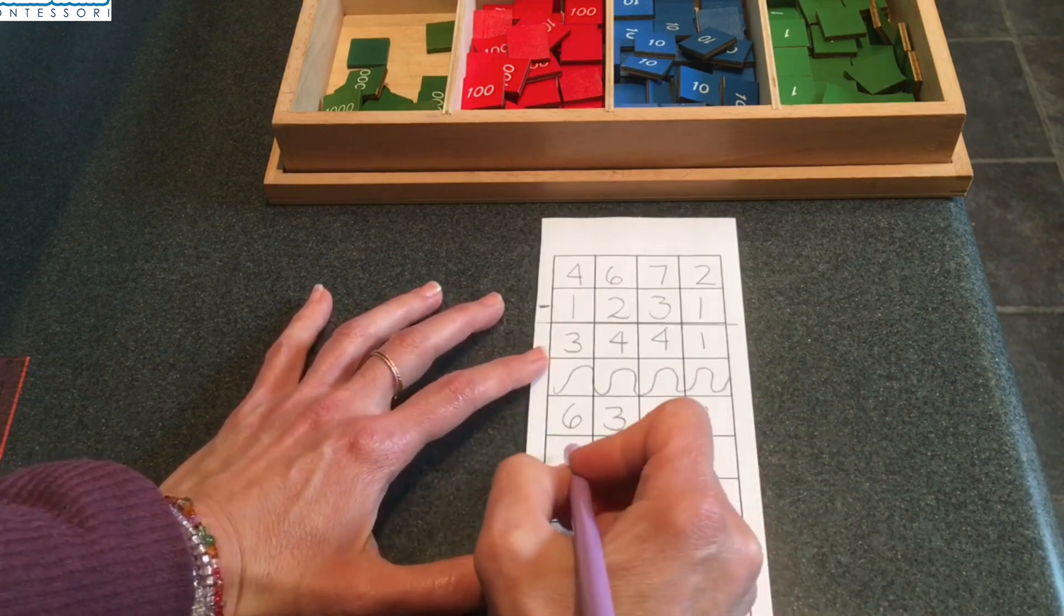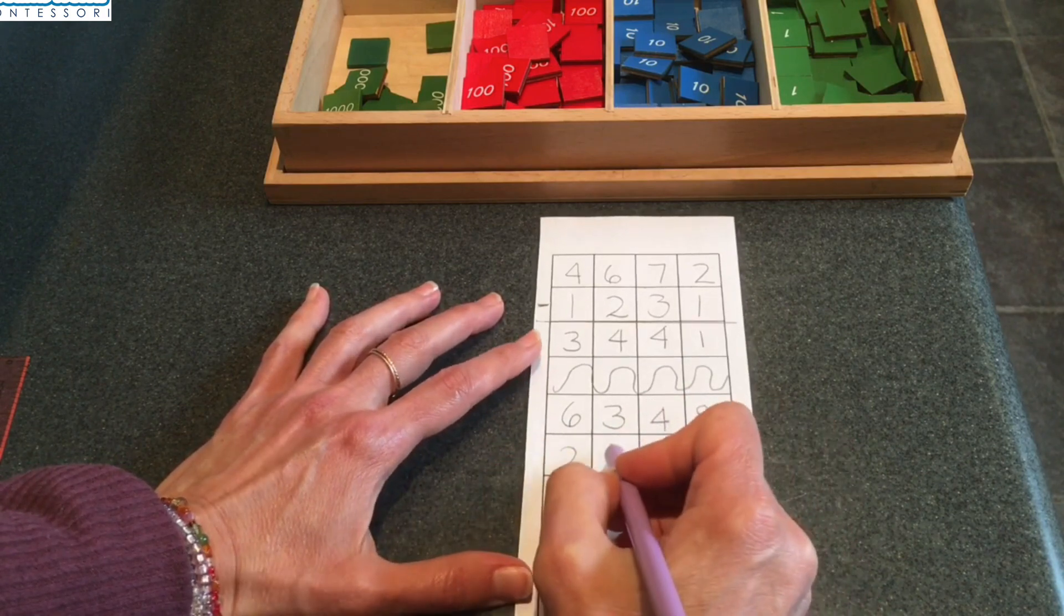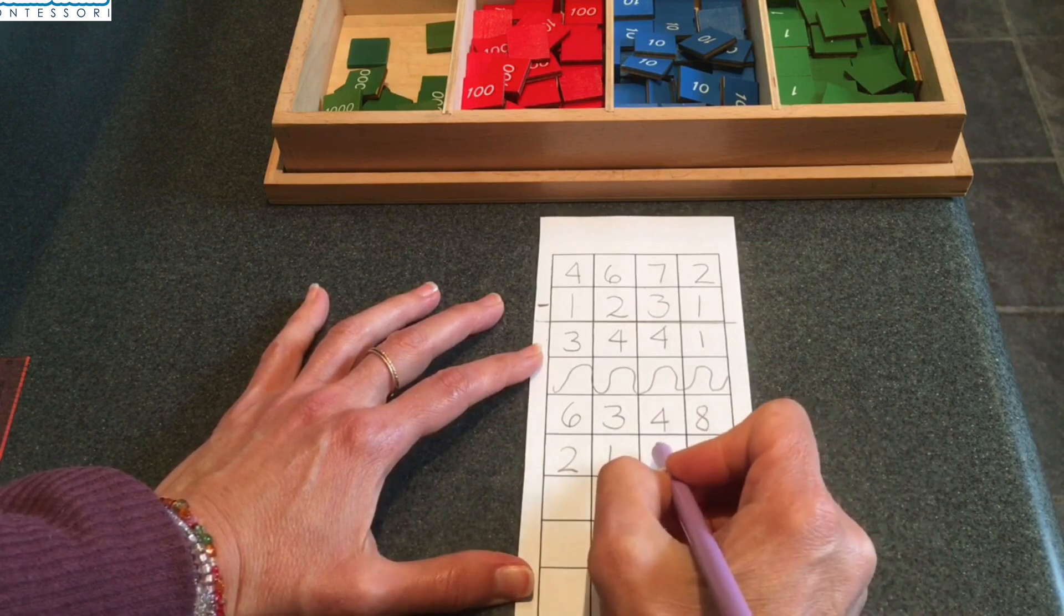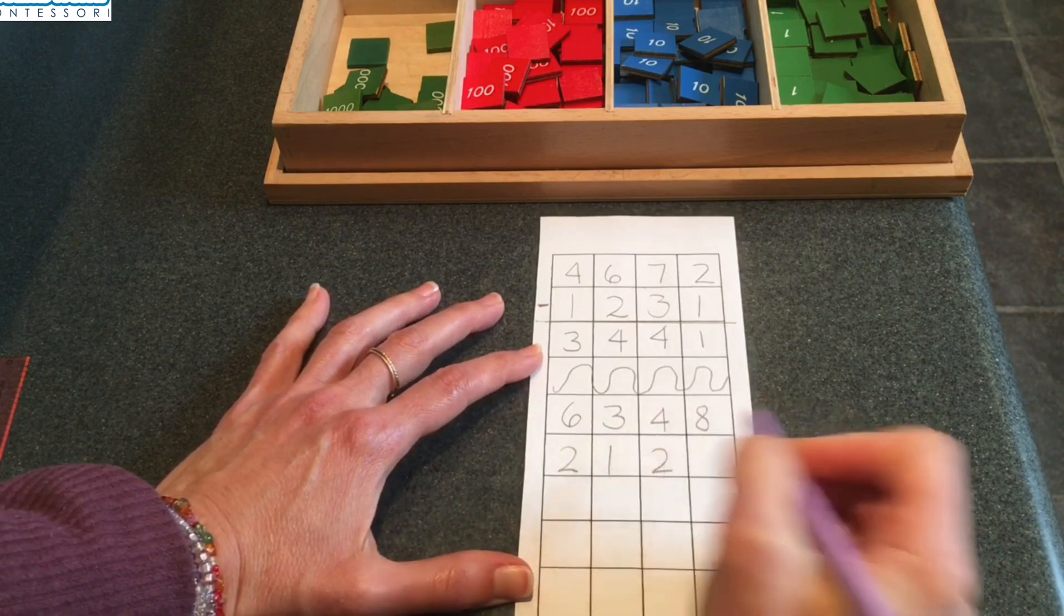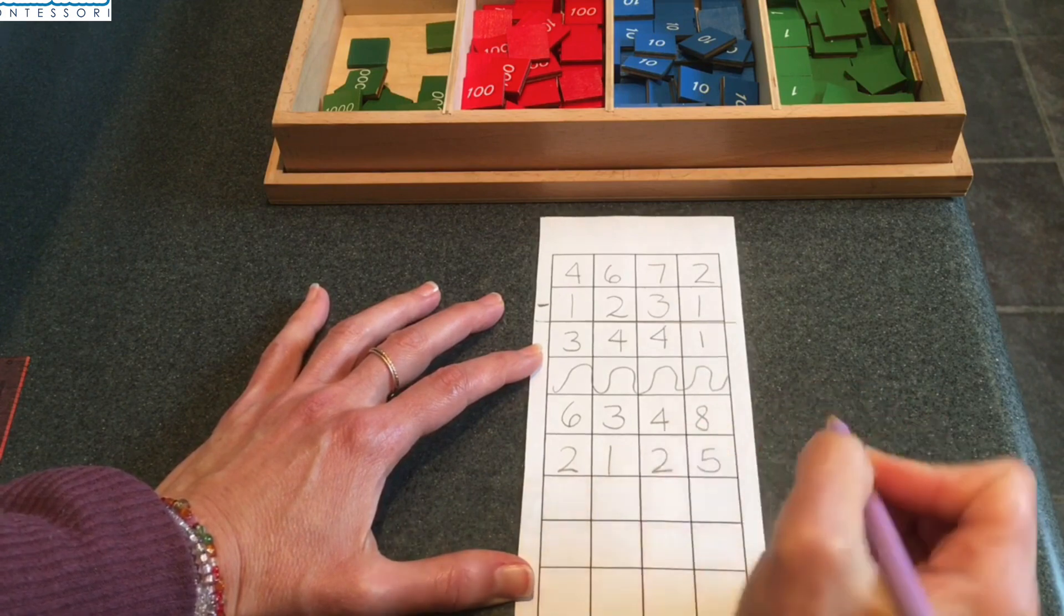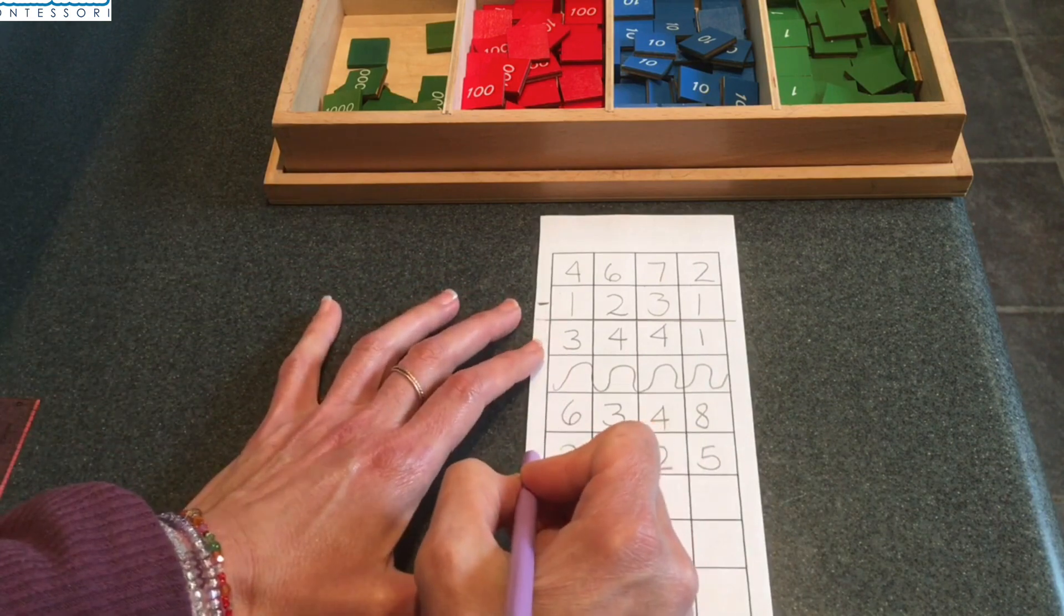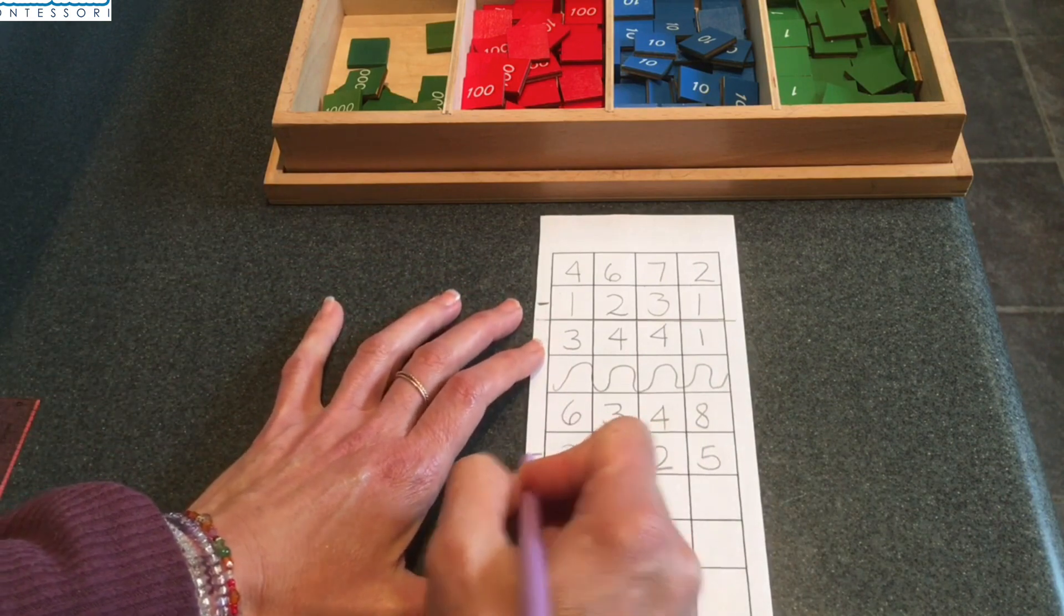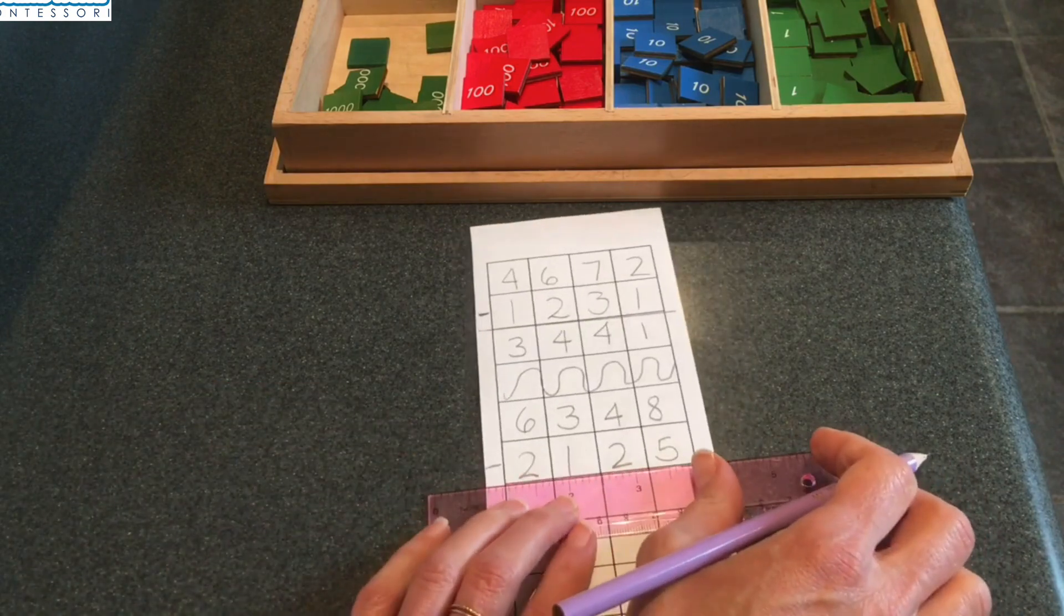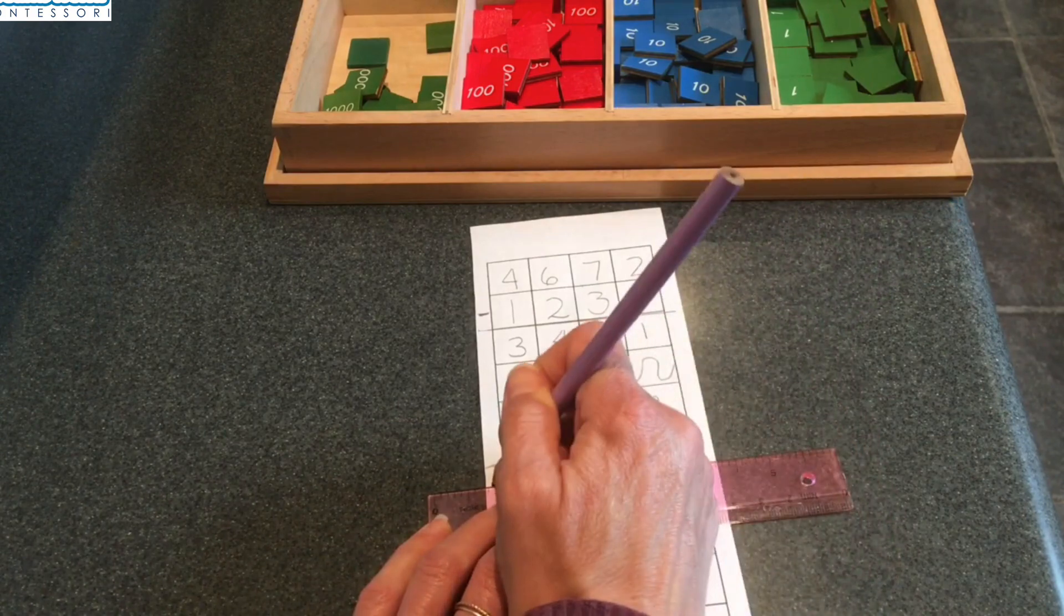My subtrahend will be two thousands, one hundred, two tens, and five units. Now that I know the minus sign, I can put it right there, and you can too. And then I'll draw my equals bar. Okay.